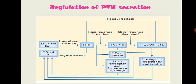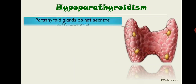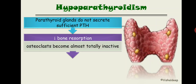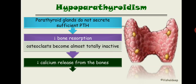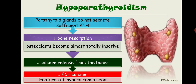Now the applied aspects. First, decreased parathyroid hormone level: hypoparathyroidism. The parathyroid gland does not secrete sufficient PTH, leading to decreased bone resorption. Osteoclasts become almost totally inactive, causing decreased calcium release from bone and ultimately decreased extracellular fluid calcium — hypocalcemia.